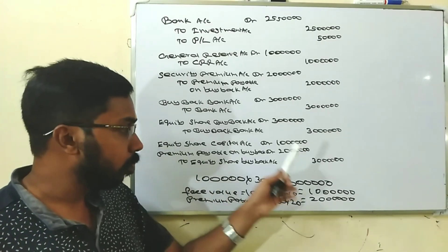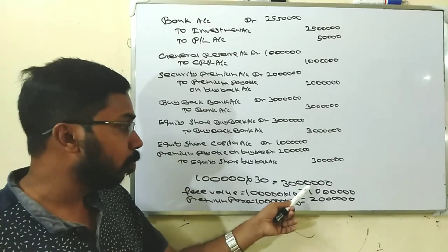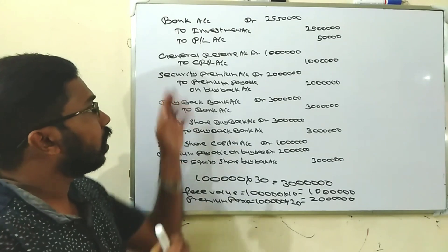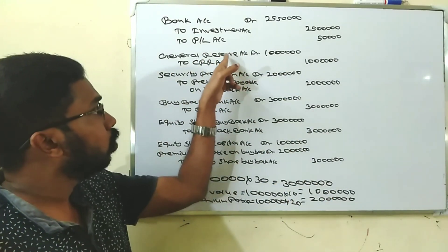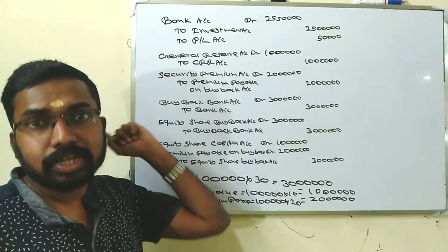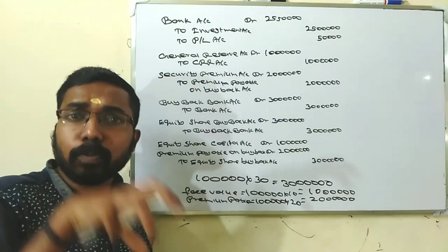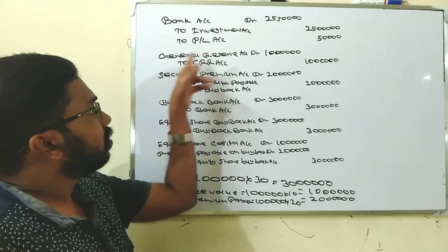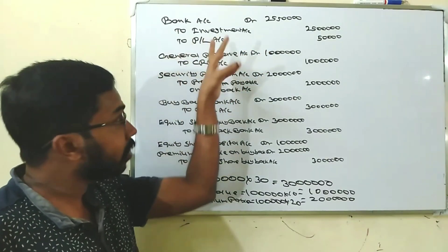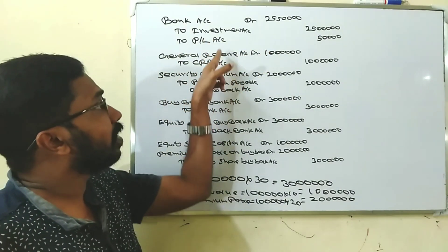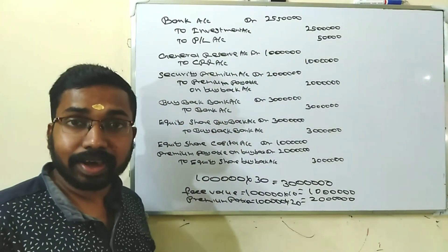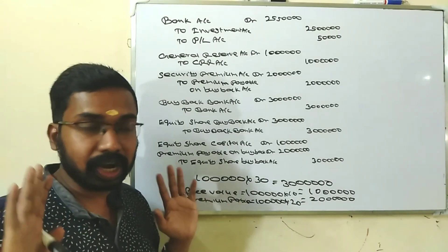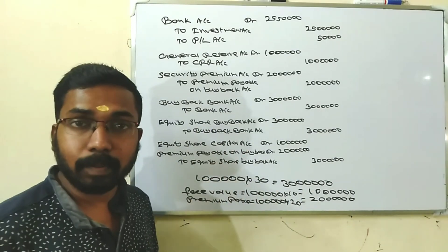Premium of 20 lakhs comes from security premium account. Face value of 10 lakhs comes from general reserve account. Capital redemption reserve account is 10 lakhs. Total 30 lakhs for buyback.